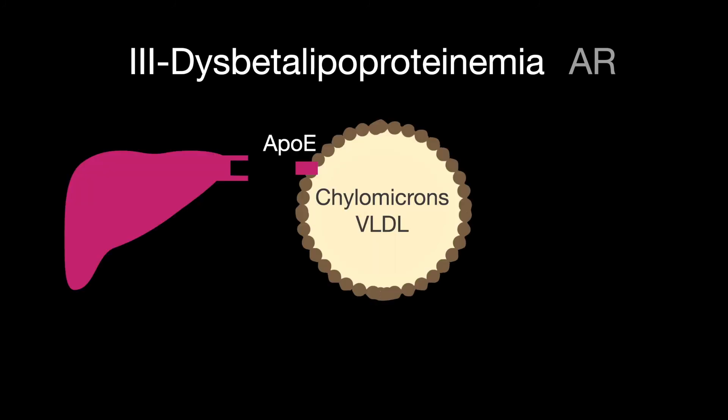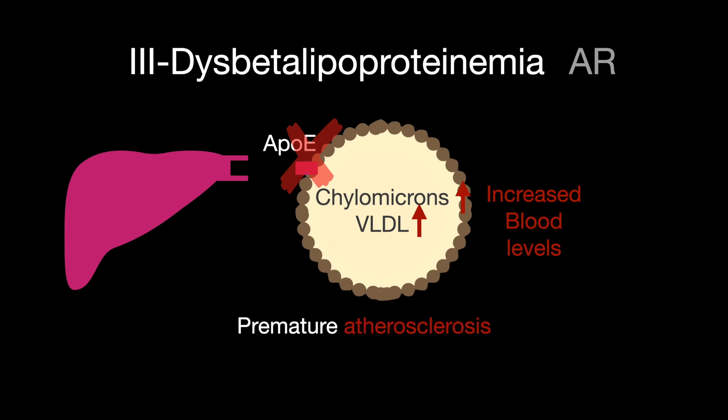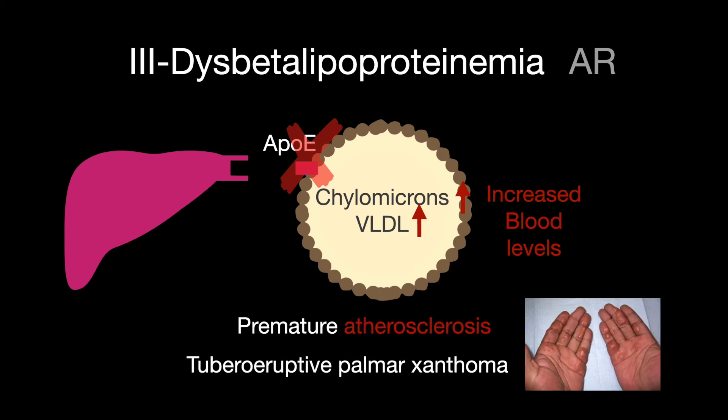Type 3 dysbetalipoproteinemia is autosomal recessive and caused by defective APO-E. Chylomicron and very low-density lipoprotein uptake cannot occur, and thus they build up in the blood. Premature atherosclerosis, tubero-eruptive, and palmar xanthomas occur.